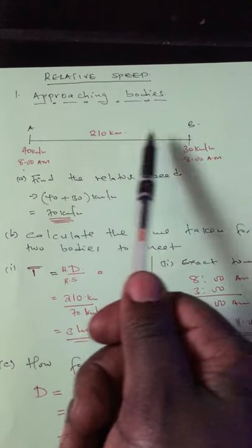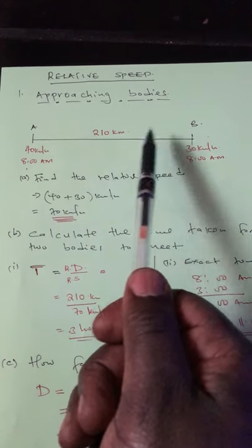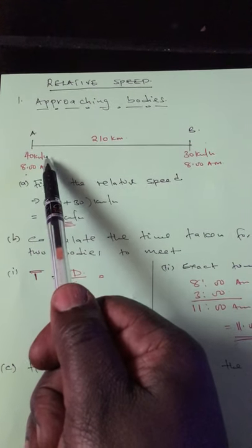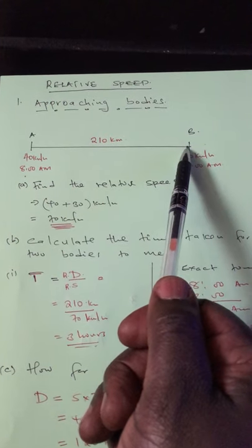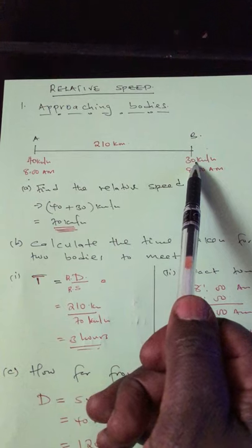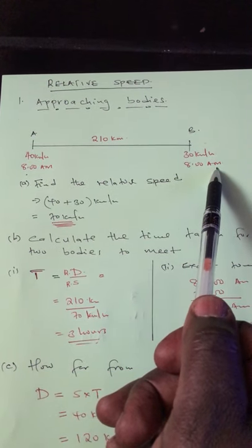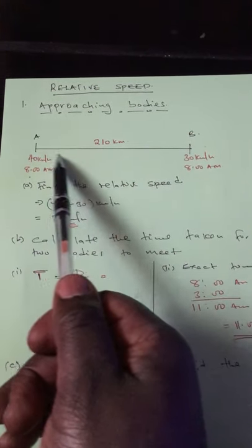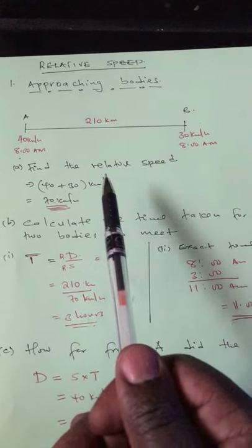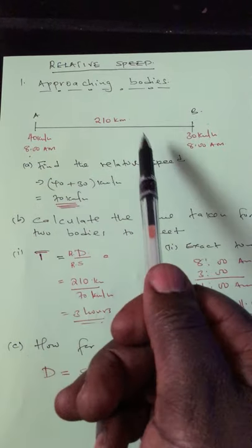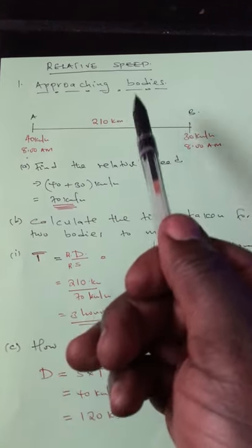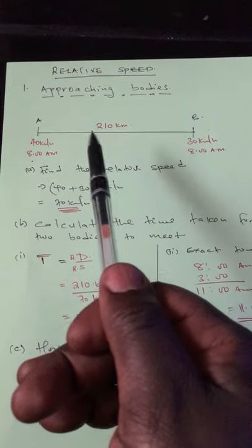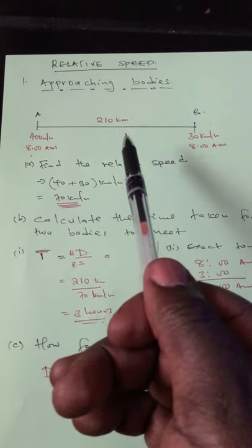From these two points, we have something moving from A towards B at a speed of 40 kilometers per hour, and it began its journey at 8 a.m. Another one moves from B to A at a speed of 30 kilometers per hour, and began its journey at the same time. The common questions from this scenario are: at what time did they meet, and how far from one of the points did they meet?